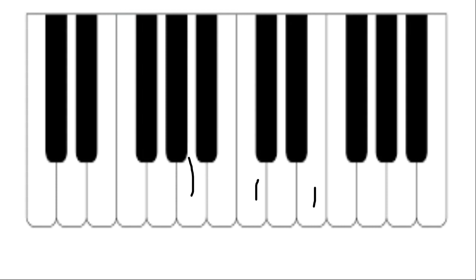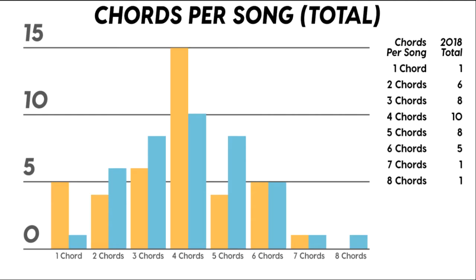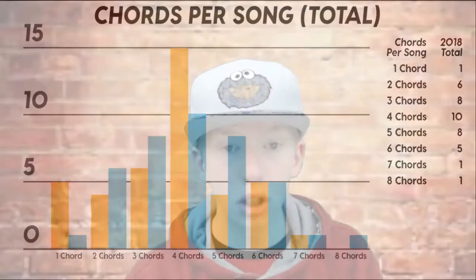Now that we know what a four chord progression is, here's a list of the top five Billboard songs of the year for 2018. Ten of the songs use four chords throughout the entire song, close behind is three chords with eight and five chords with eight, slowly dropping off from there. So the majority of these songs are only using four chords when there are so many more they could be taking advantage of.